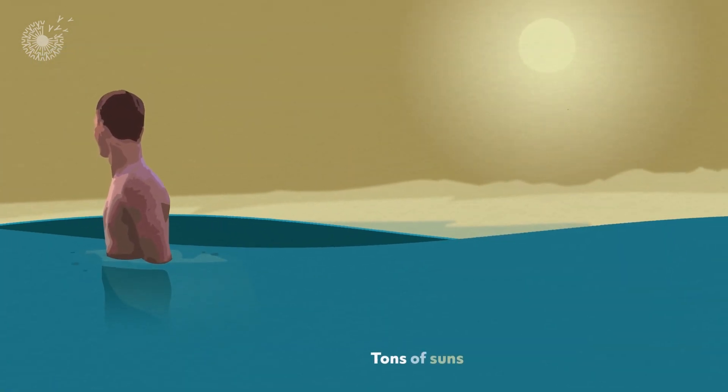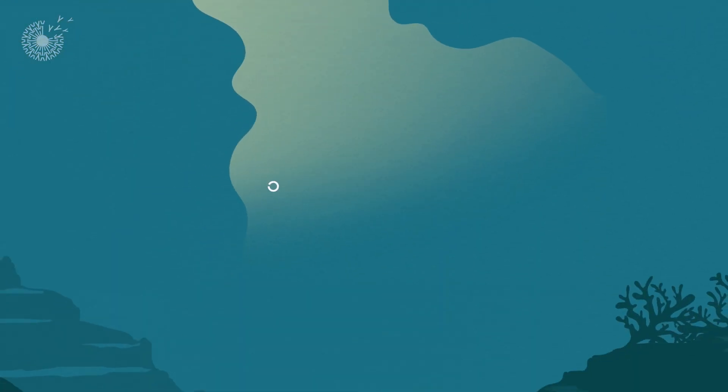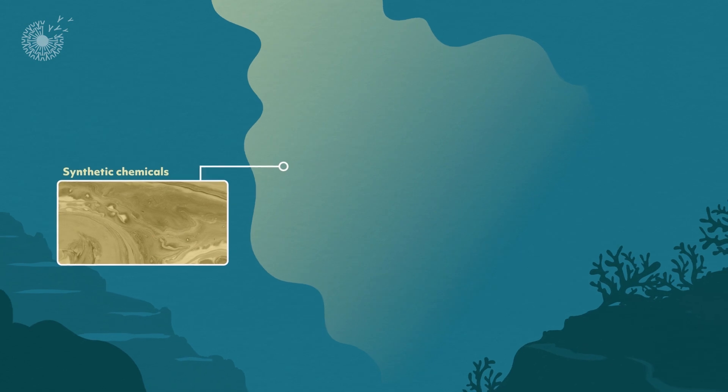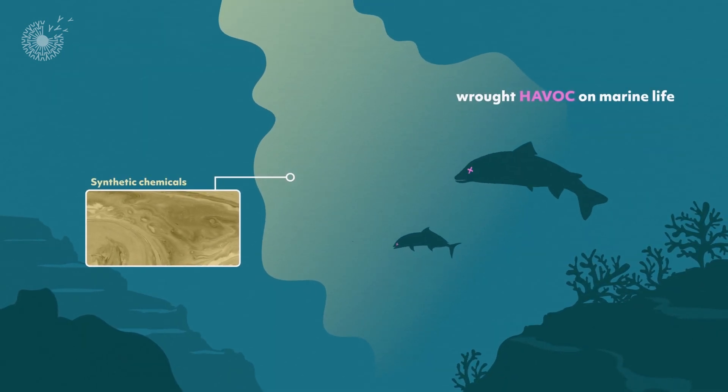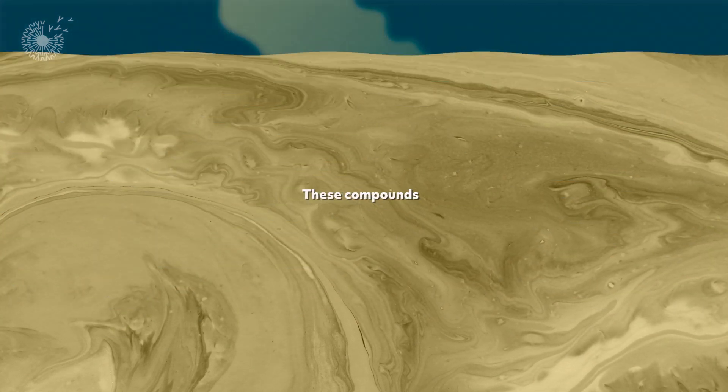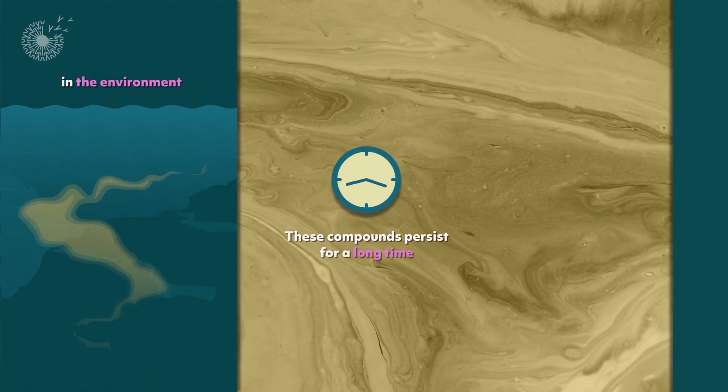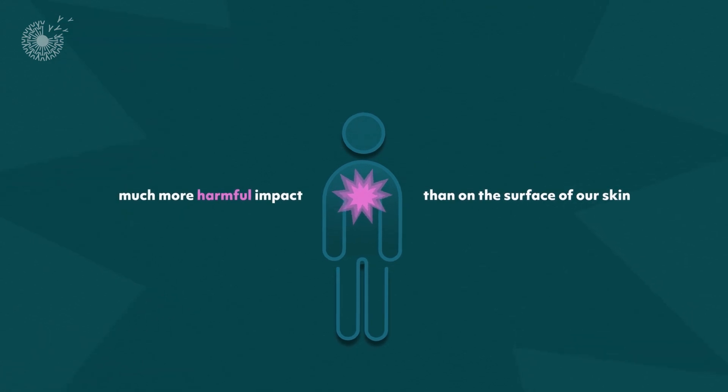And as a result, tons of sunscreen has slithered off people's bodies into the ocean. There, the synthetic chemicals that were helpful to protect human skin from harmful ultraviolet light have wrought havoc on marine life. These compounds can persist for a long time in the environment and in our bodies, where they may have a much more harmful impact than they do on the surface of our skin.